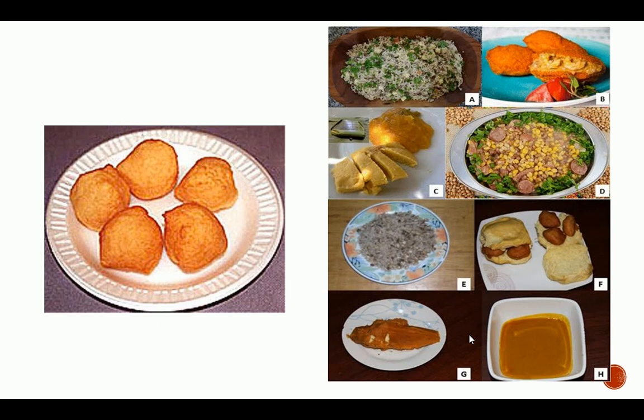These are the ways cowpea can be used in preparing food. It's used to make bean cake, also known as akara. We have moi moi. We have other mixtures — used in combination with bread as a breakfast snack and so on. It can also be used to make oil.